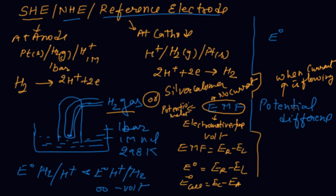EMF is measured by a potentiometer, whereas potential difference is measured by a voltmeter. This is a very important point: EMF is the maximum voltage which we can get from the cell, calculated when there is no current. Potential difference is obtained from a voltmeter, and EMF from a potentiometer.